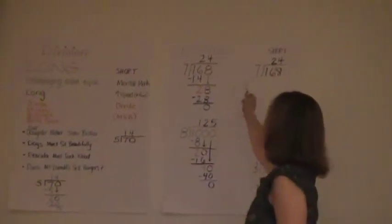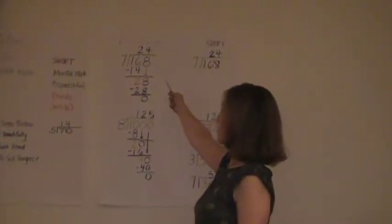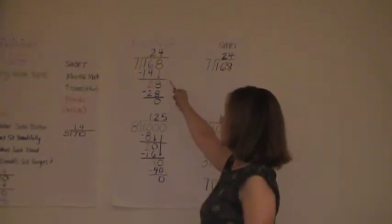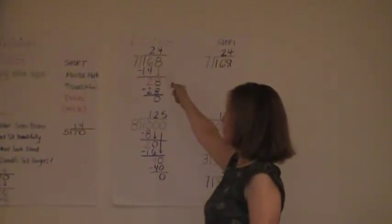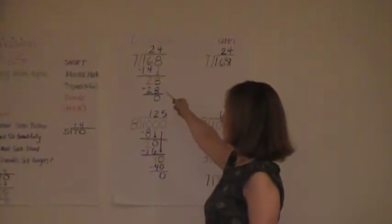So here's a couple other examples. 7 into 168, so in the long form, you look at it 7 into 16 goes in twice. 2 times 7 is 14 and then do 16 minus 14 is 2, which you see over there.